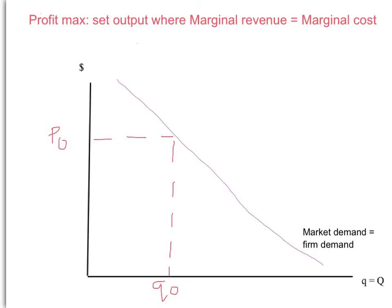Now let's suppose the monopoly sells one more unit — it's going to produce an extra unit, so this amount here, which I'll label Q0 plus 1. What price is it going to set for that unit? Well, it's going to want to sell all of its output for the highest price possible, and that price is up here — I'll label that P1.